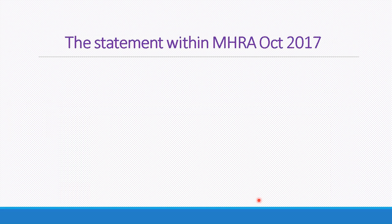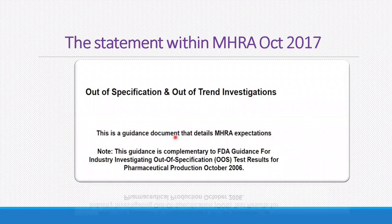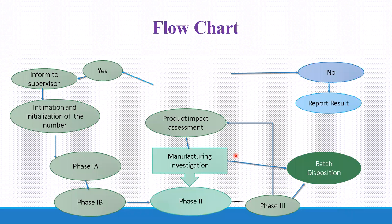The MHRA October 2017 guidance document states that it deals with MHRA expectations and is complementary to the FDA guidance for industry on investigating out-of-specification test results for pharmaceutical production, October 2006. This means both FDA October 2006 and MHRA October 2017 are used together for investigation of out-of-specification results. Now let's see the flowchart of OOS.